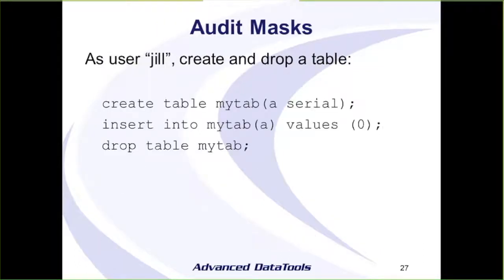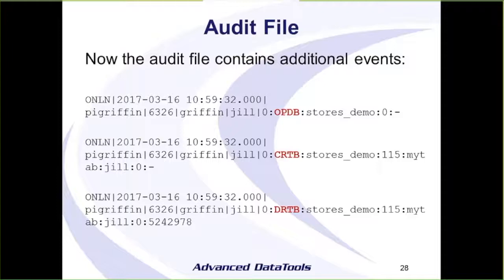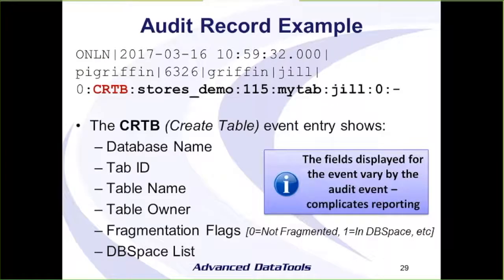As user Jill, we're going to do a few operations: create a table, insert into that table, drop it, and then see what's in the audit file. We now see some additional events. As expected, we've got the open database, the create table, and the drop table. What we don't see is the insert, because that was not an event we're tracking. For a create table event, the audit file records the database name, table ID, table name, the owner, a flag indicating fragmentation, and the DB space it was created in.